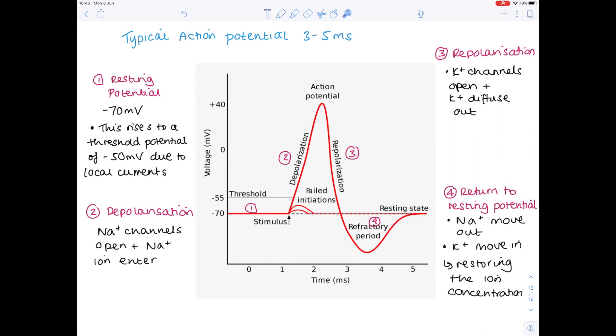Notice that there are sometimes failed initiations where the neuron fails to reach the threshold potential, so you can see these on the graph here. The refractory period is the restoration of that ion concentration before the neuron is able to fire again. Just get yourself familiar with this graph, the various scales and what the various phases of the graph refer to.